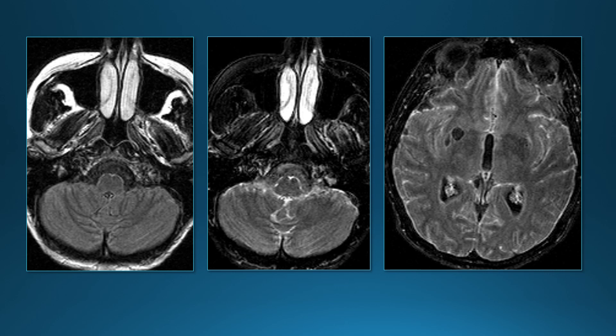These are pre- and post-contrast FLAIR images. The post-contrast FLAIR images are probably the most sensitive for leptomeningeal enhancement. We can nicely see the enhancement within the sulci — they turn white on post-contrast FLAIR, again along the brain stem. Overall, post-contrast FLAIR is probably going to be the most sensitive for leptomeningeal enhancement.